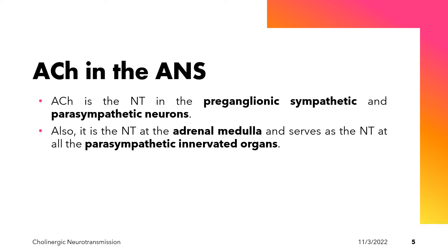Acetylcholine is also the neurotransmitter at all parasympathetic innervated organs — we also call this the neuroeffector junction. So at the neuroeffector junction of all parasympathetic innervated organs, acetylcholine is being released.